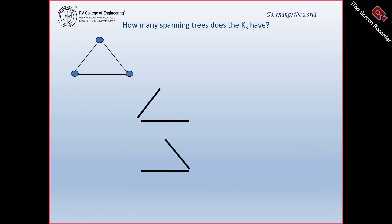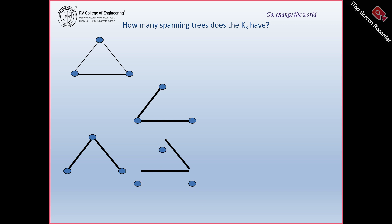Now suppose we have C3, which is a cycle with three vertices. What are the spanning trees? By removing this edge I get this tree; by removing this edge I get this; by removing this edge I get this. So I will be getting three spanning trees.